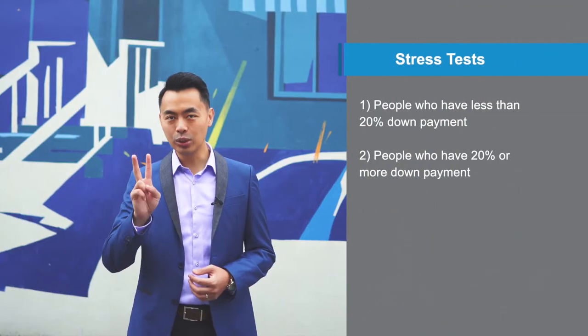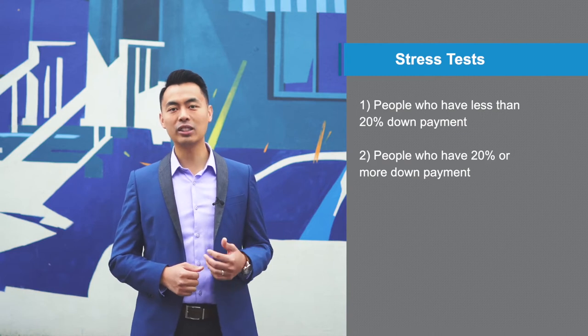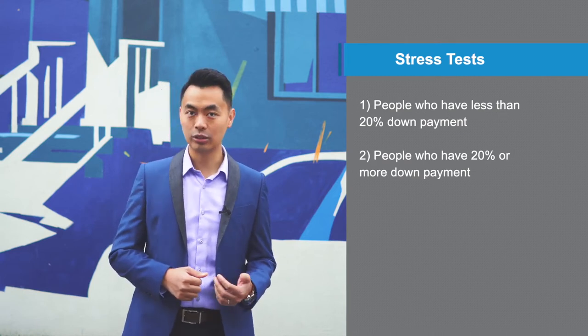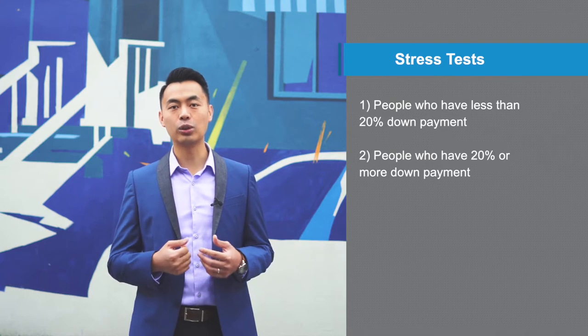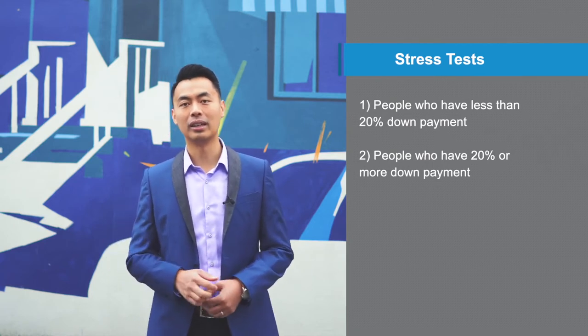First off, let's clarify what exactly is the stress test. There are two types of stress tests. One is for people who have less than 20% down payment, and the newest stress test affects those who have 20% or more down payment. We're going to be talking about how to avoid or minimize the stress test for those who have 20% or more down payment. There's no getting around the stress test if you have less than 20% down payment.